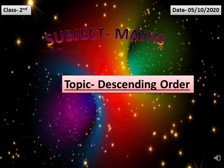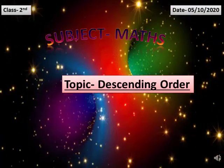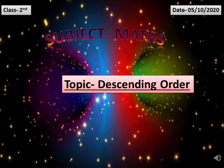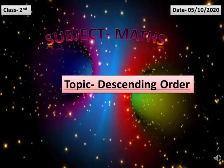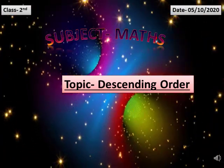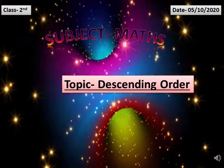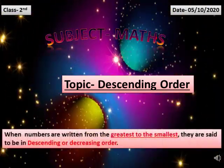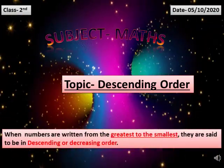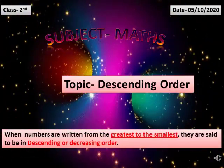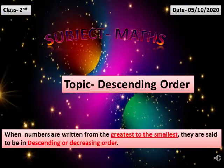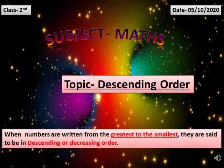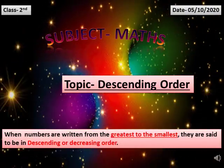Good morning dear students. Our today's topic is descending order. What is descending order? When numbers are written from the greatest to the smallest, they are said to be in descending or decreasing order.